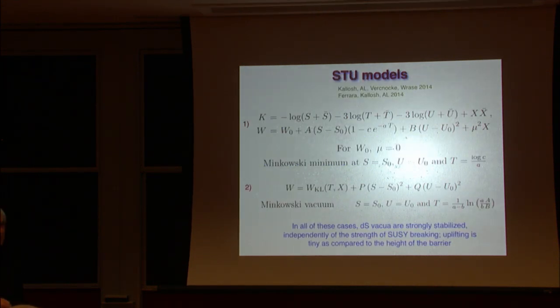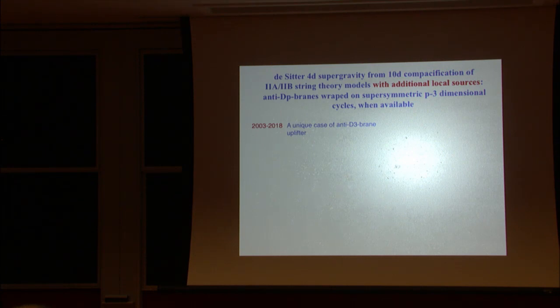These are generalizations of this model. We have several different fields. This is so-called STU model. We have many different fields. And still we have a possibility of the first approximation, supersymmetric Minkowski minimum, then slightly make it AdS, slightly uplifted back. So a relation between supersymmetric brane and height of the potential is the same as in this previous model. And again, in this set of models, you can have a possibility to have stability in cosmological background.